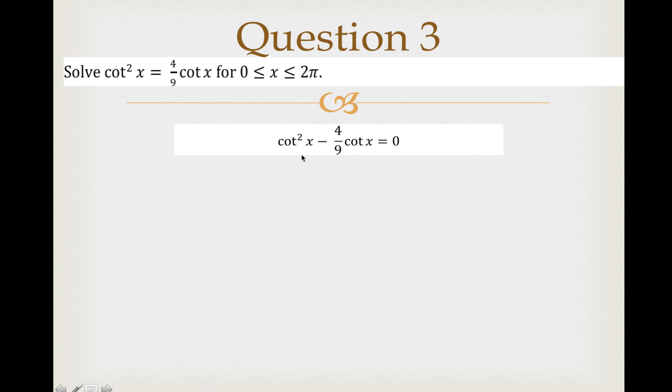As you can see, for those two terms, cot x is common, so you can factor out cot x. The result is cot x multiplied by (cot x - 4/9) equals 0.